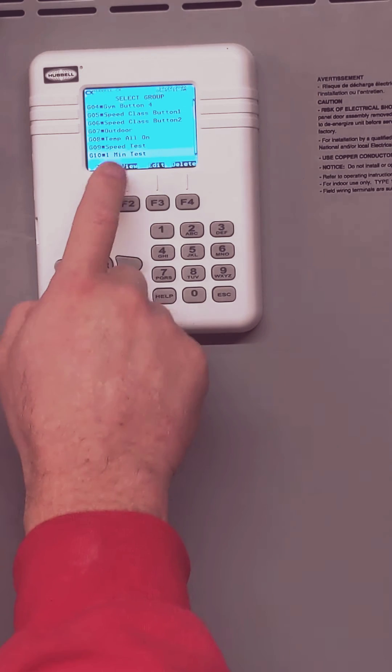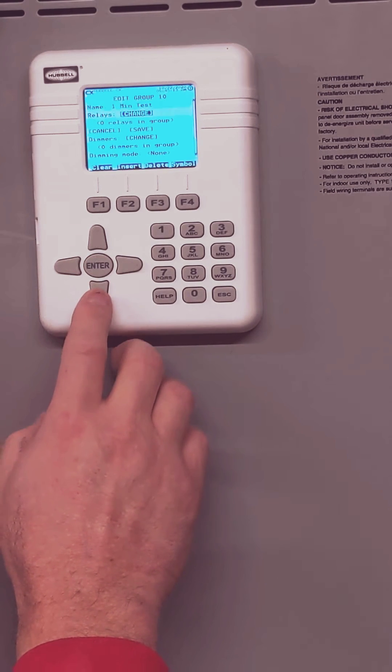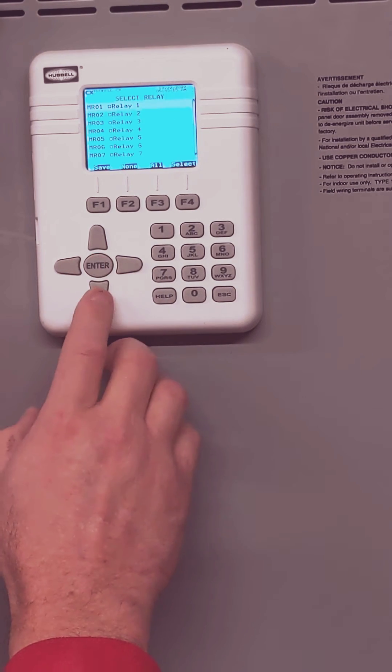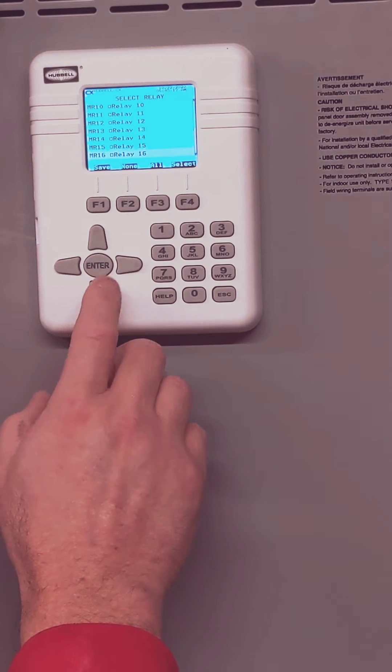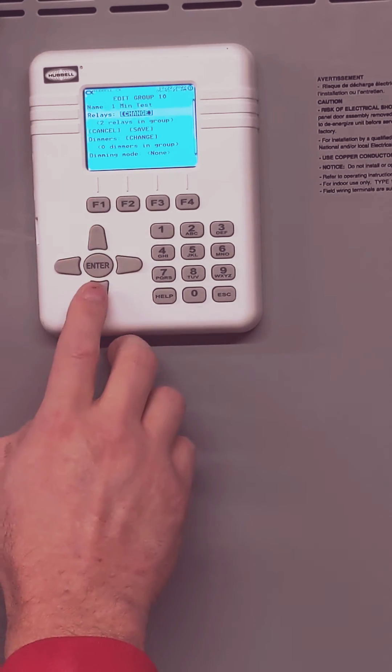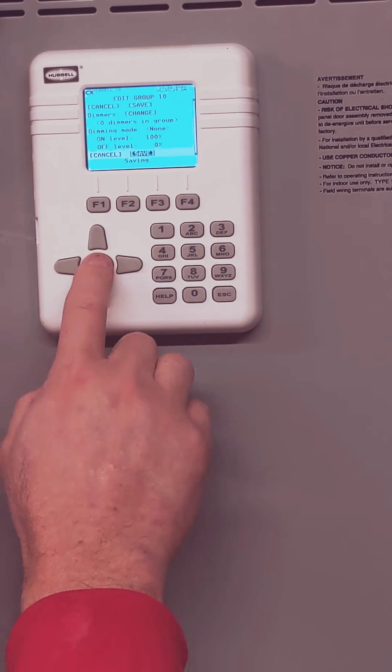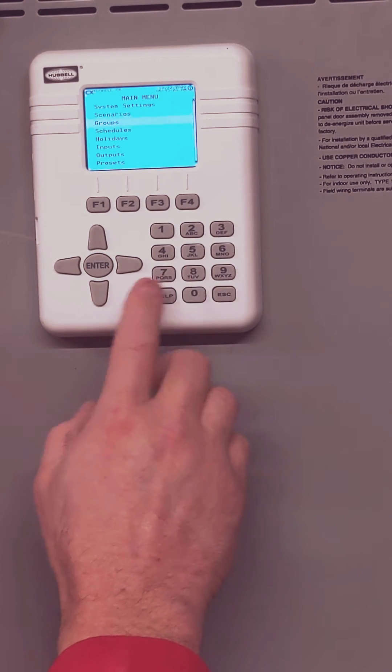For speed, I set up the name first. So name, relays, change. We're going to do two relays turn on, 14 and 16, since those are both nothing. And then go to save, and then we escape that.